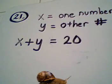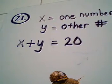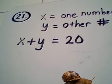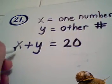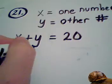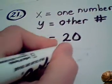The second fact we're given is the difference of the two numbers is 2. Remember, difference means to subtract. So we have X minus Y is equal to 2.